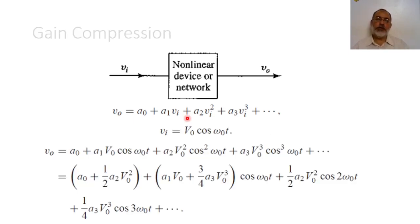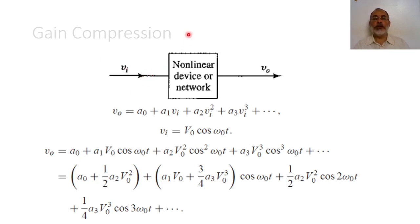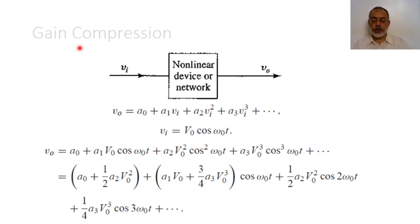Now we have presented the general representation for a nonlinear device or network. In the following video, we are going to talk about gain compression — how, for an amplifier, the gain will be constant over a certain region and then go into saturation such that the output signal no longer increases as the input signal increases, causing gain compression. We will see how to define gain compression and what its effects are.